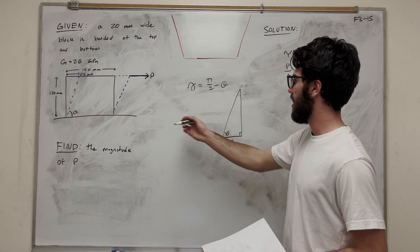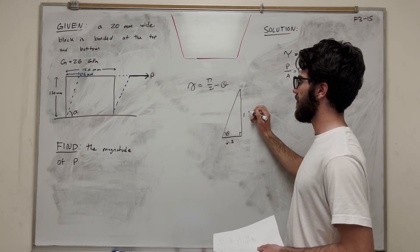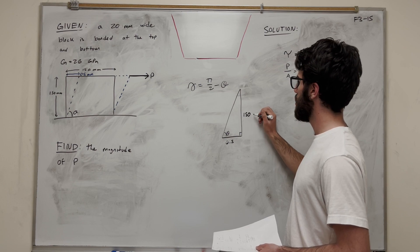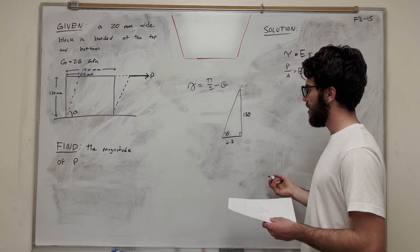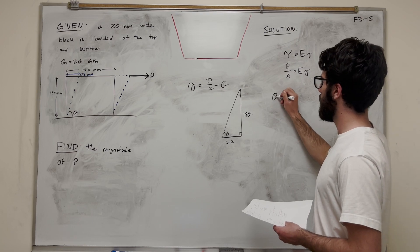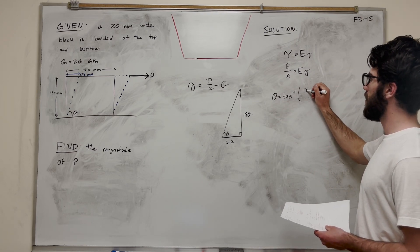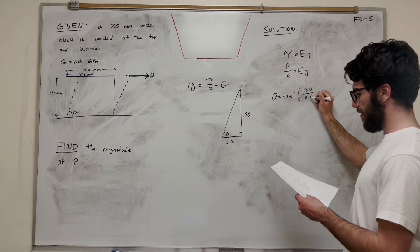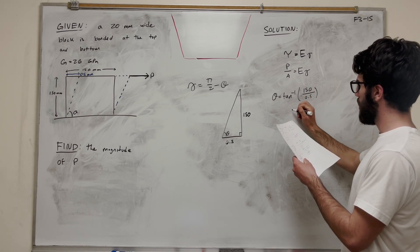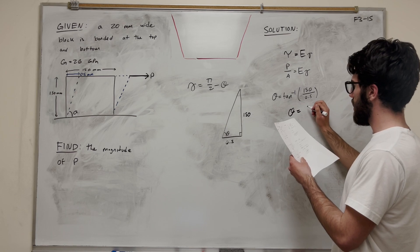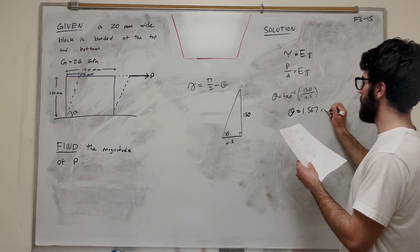This line here, the height stays the same, 150 millimeters. If we want to find this theta, we know theta equals inverse tangent of opposite over adjacent, so 150 over 0.5.